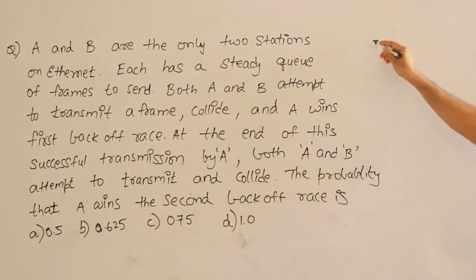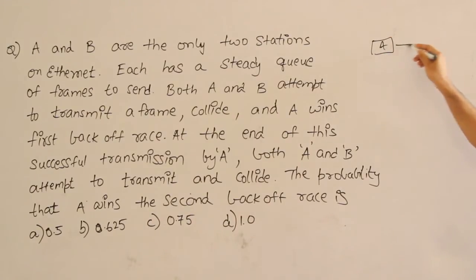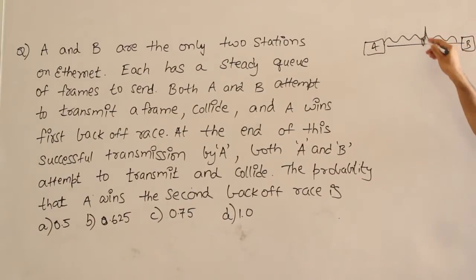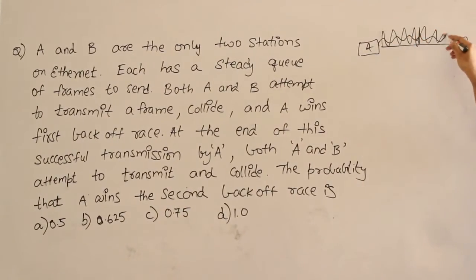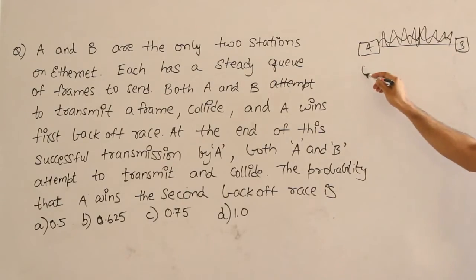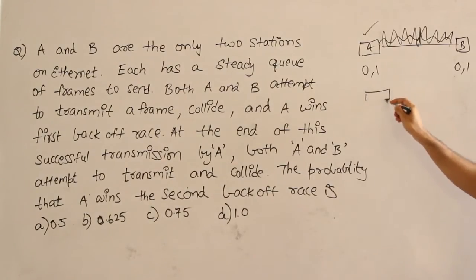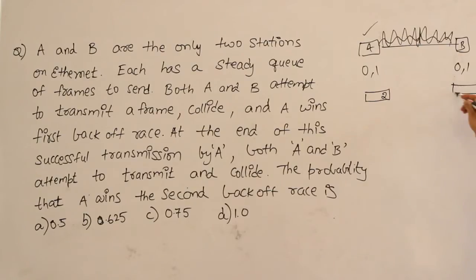What they are saying is, A is here and B is here and both of them started transmission and then they collided and then they played the backoff race. Therefore, initially 0, 1 and 0, 1 are the numbers and now A won, which means A has sent its first packet and A is ready with the second packet but B is still ready with the first packet.